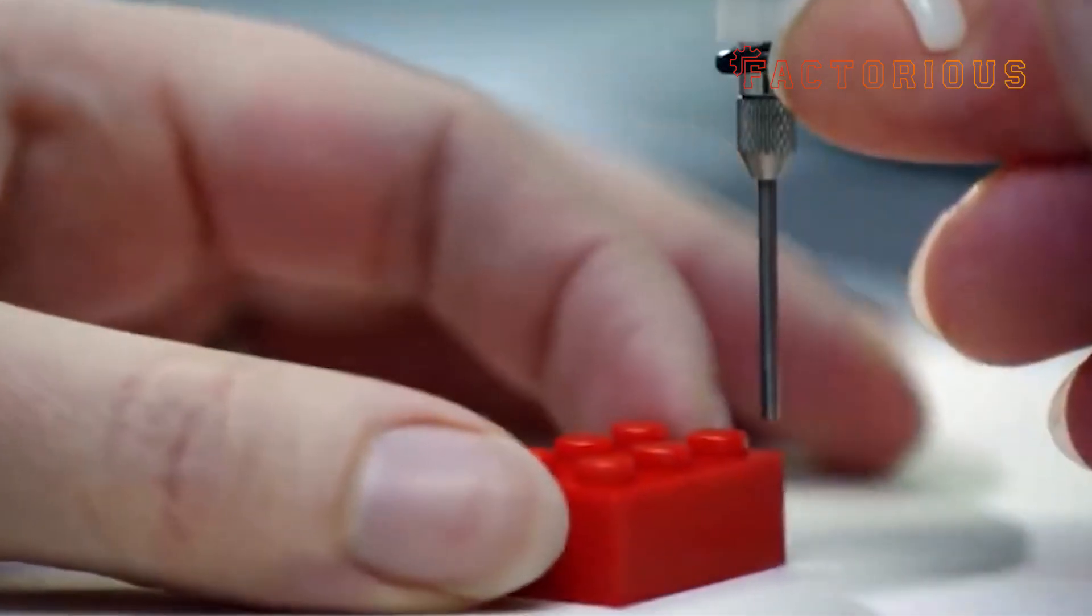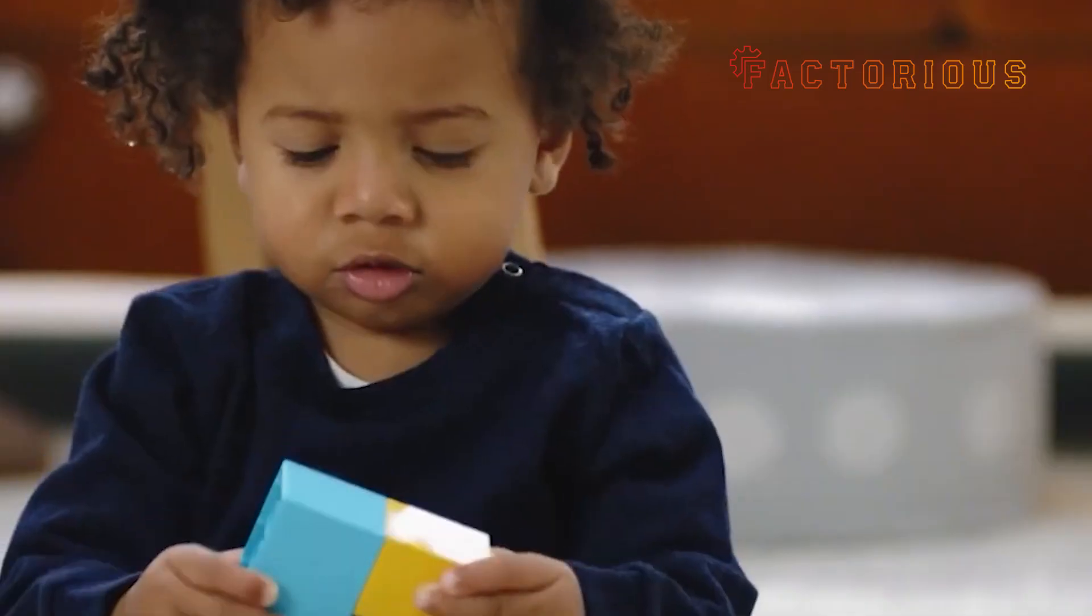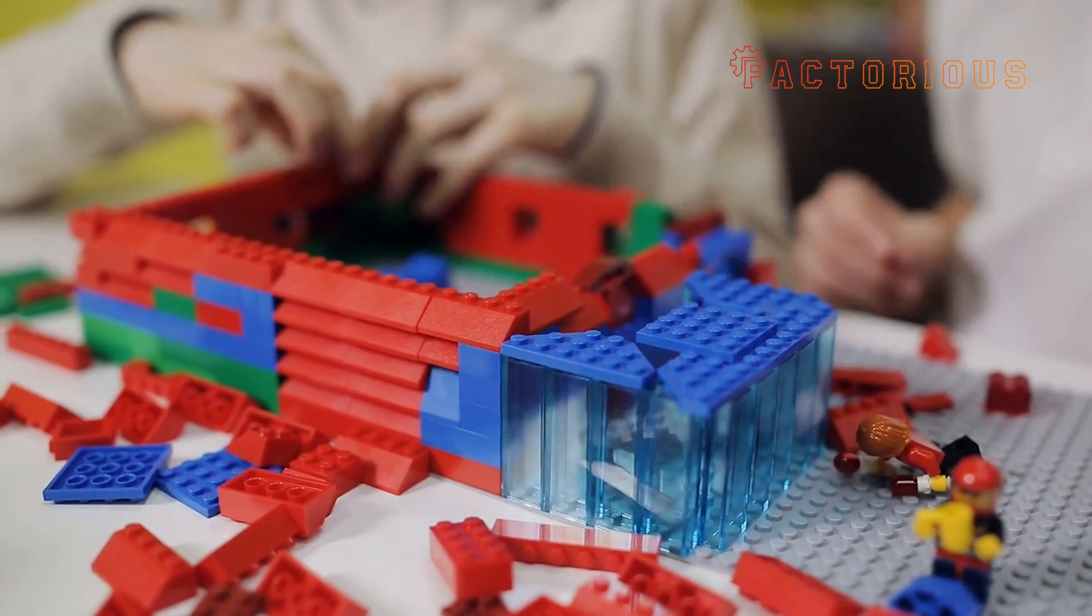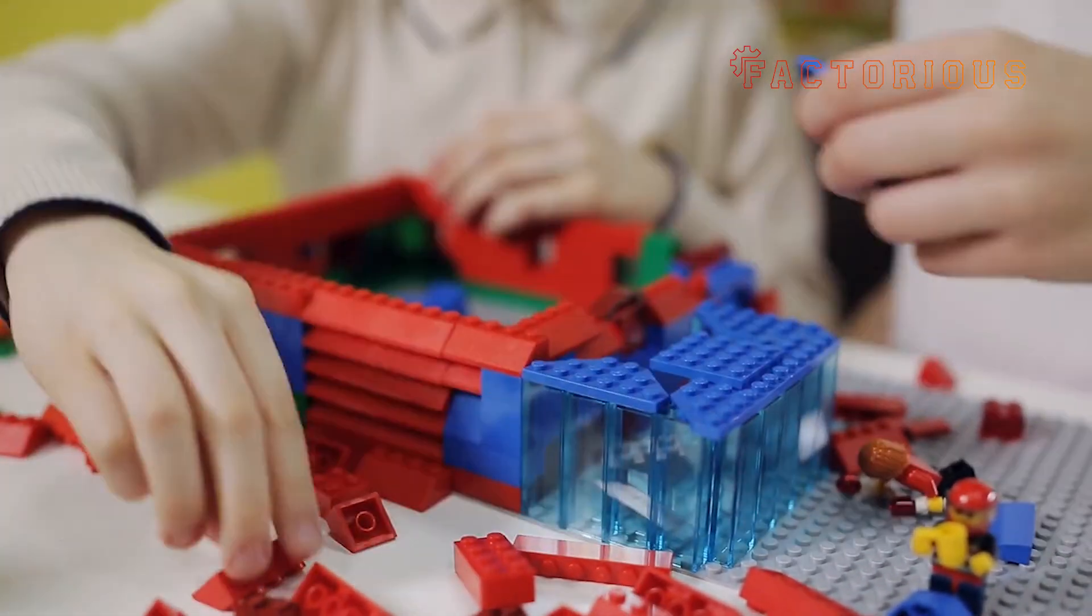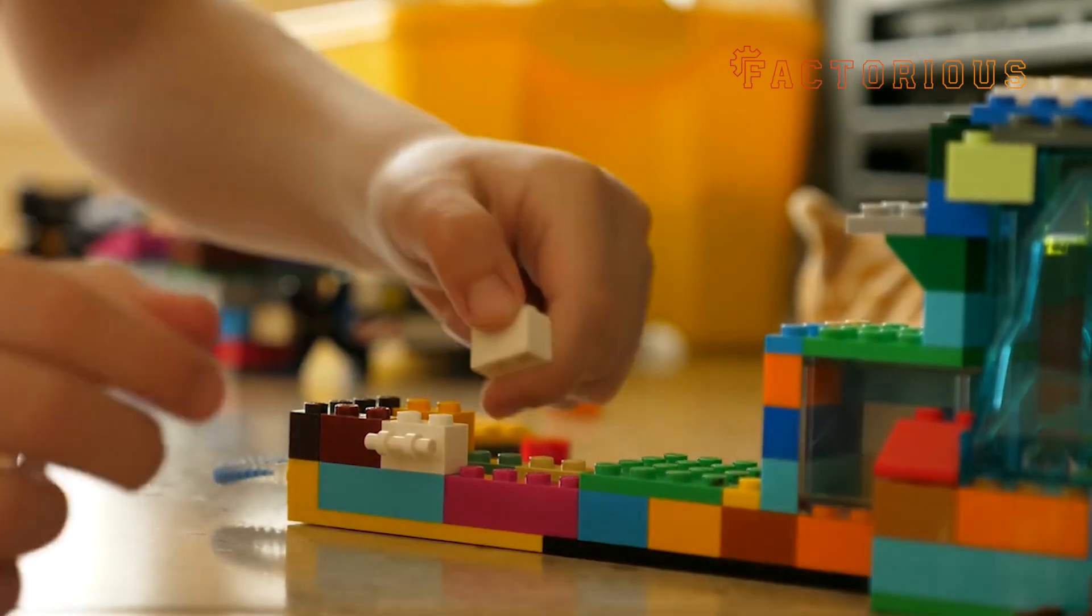Why so precise? Because if the dimensions are off even slightly, the famous click, that satisfying snap when two bricks lock together, won't feel right. And that sound is sacred in Legoland.